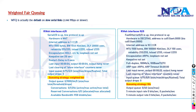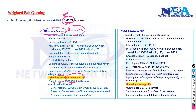By default, for most slow links, the queuing strategy will be weighted fair queuing. For example, on a serial interface like S1/0 which is a 1.5 Mbps link, any link less than 2 Mbps will have weighted fair queuing as the default queuing strategy. Any high-speed link will have first-in first-out as the default queuing mechanism.